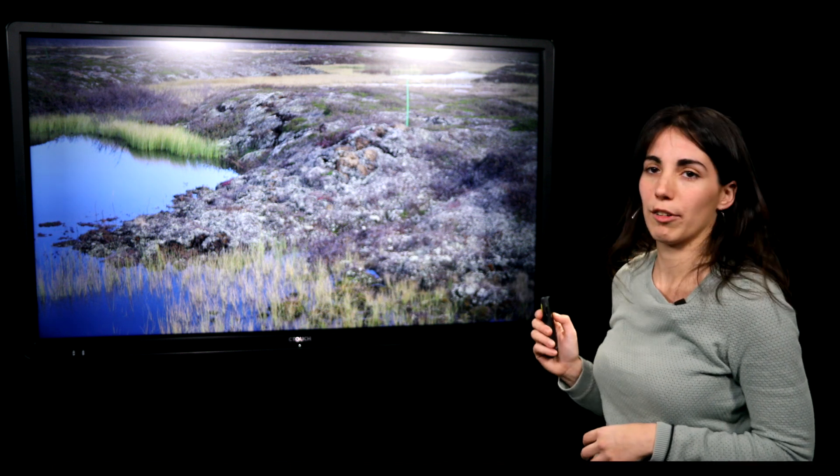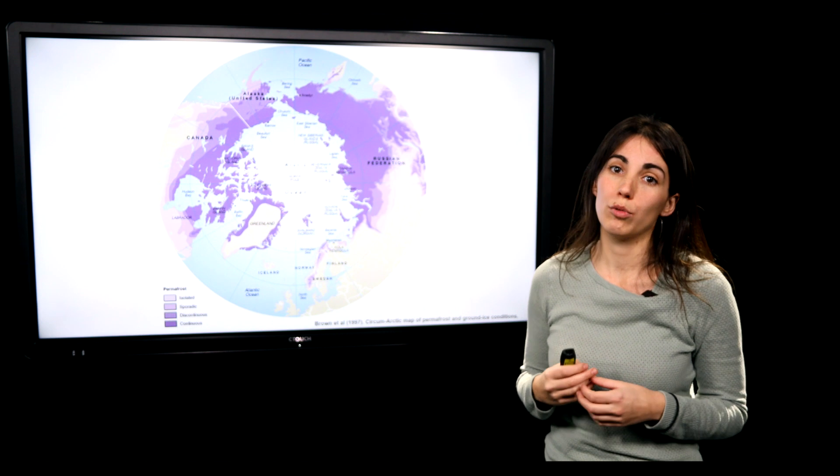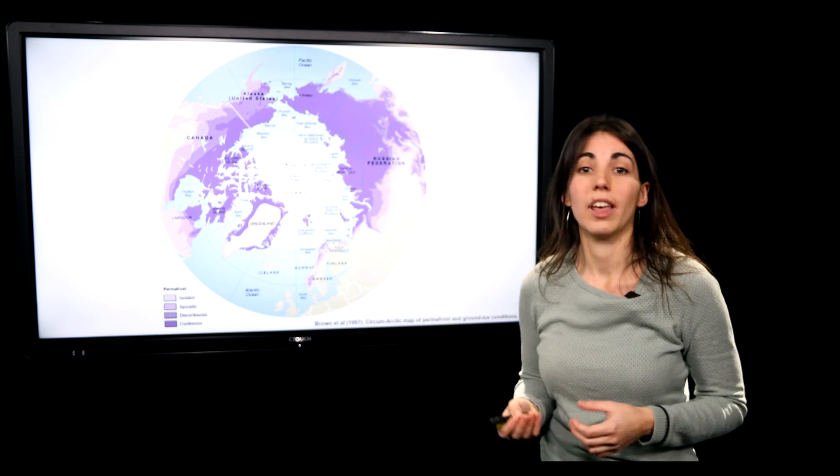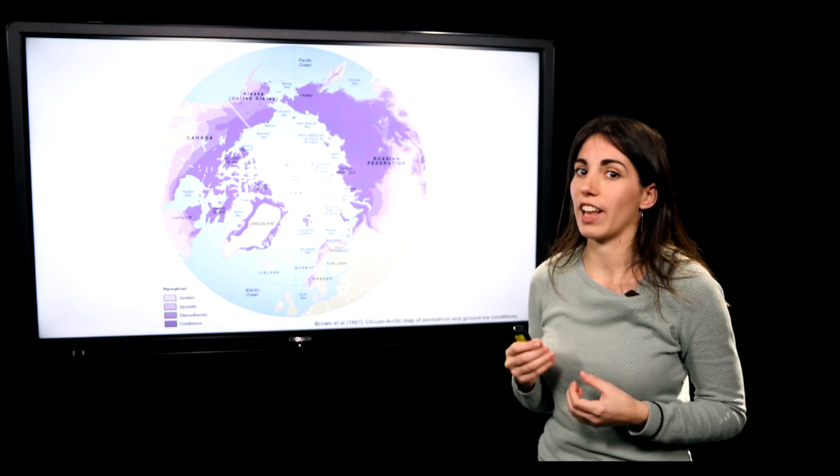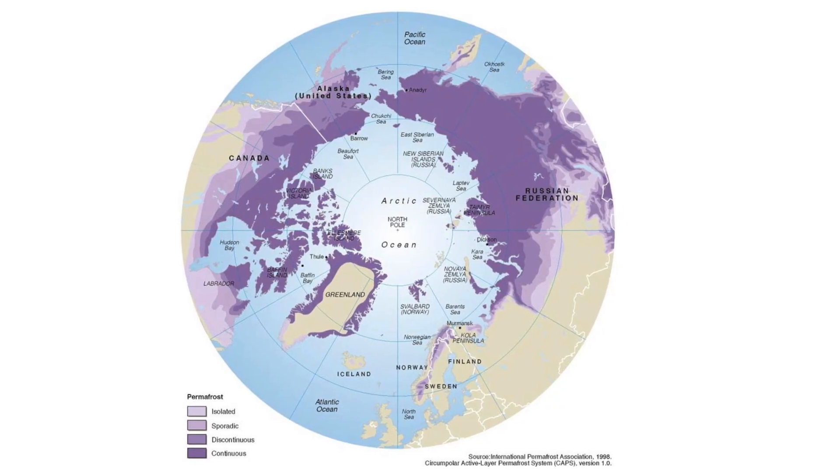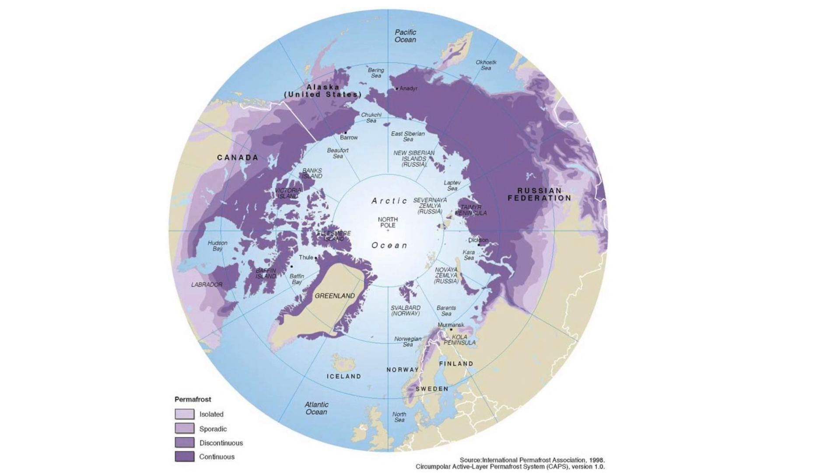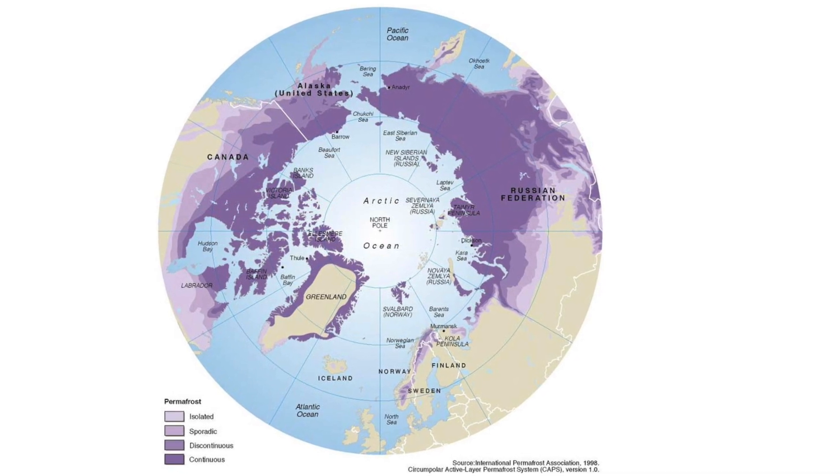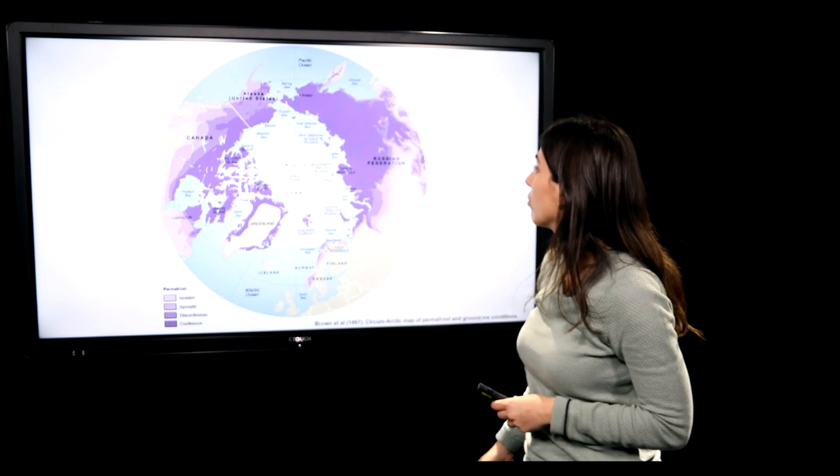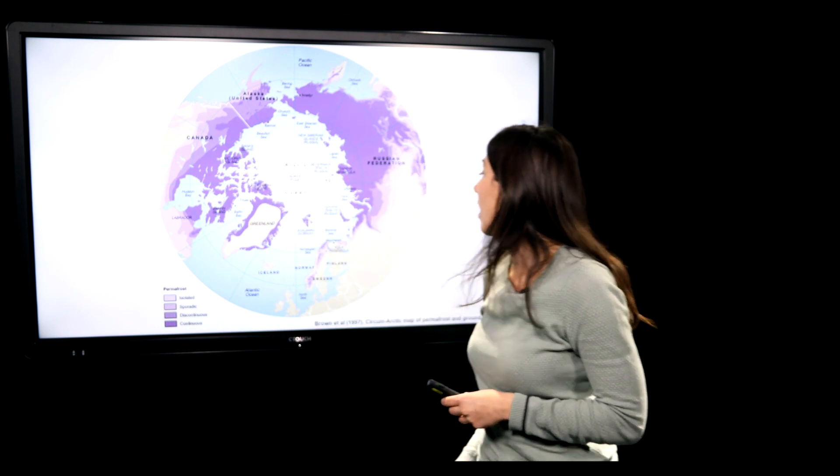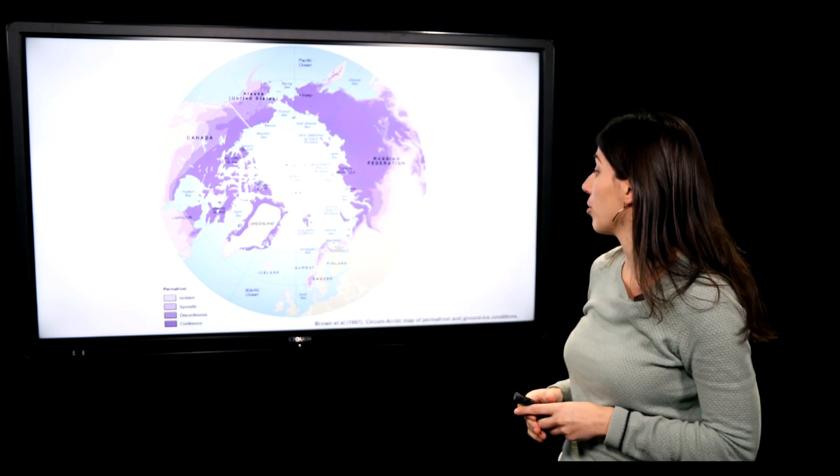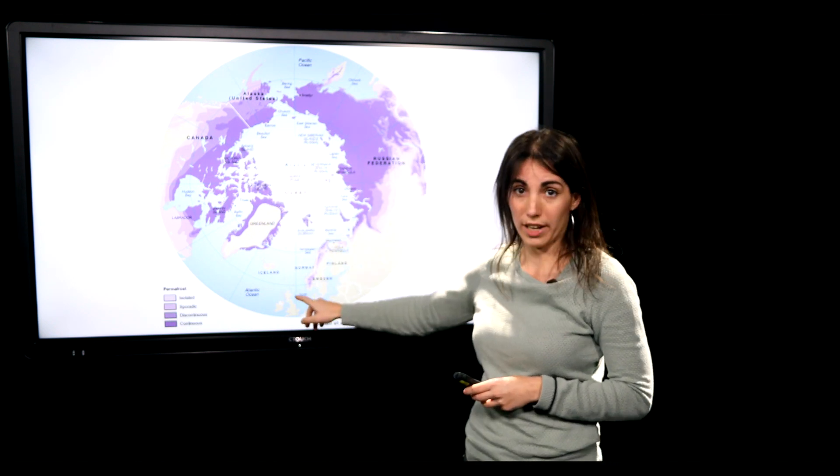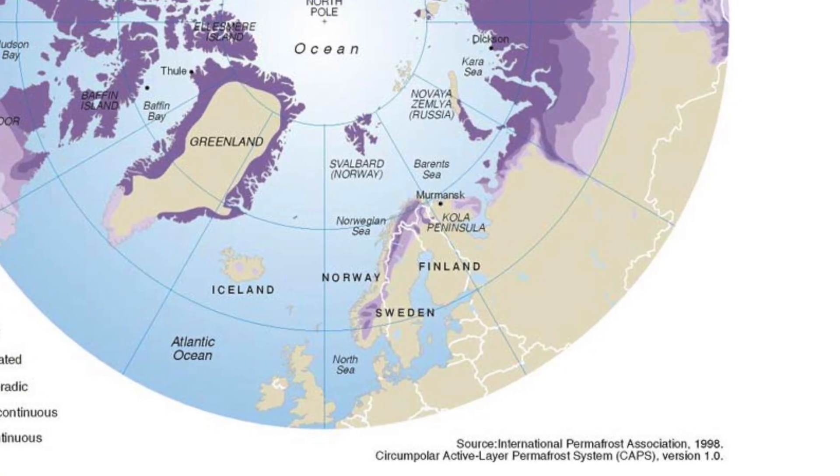To look into that, we'll have a look at this map. Permafrost is soil that has been frozen for two or more years in a row, and most of the permafrost is actually frozen for thousands of years. The permafrost in this map is indicated with the purple areas. So we can see here that large areas of Russia and Canada have big areas of permafrost, but also in Norway we have areas with permafrost.